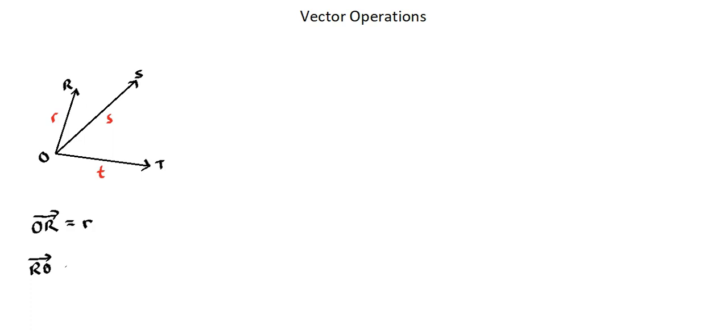Now if we were to set up a vector RO, the direction would be the opposite of small r. Going from R to O would put the head of the vector at the O end as opposed to where it is at the R end. So we would be looking at a reversal or a negative small r. So we're expressing vector OR in terms of R, OR equals R, and we're expressing RO in terms of R, RO equals negative R. In these two examples, we see something that we already are familiar with, which is there is more than one option for naming a vector. Now let's apply this concept to vector addition and subtraction.